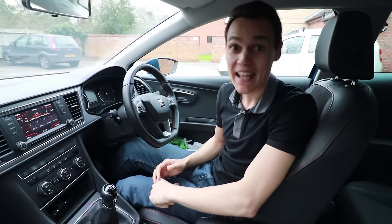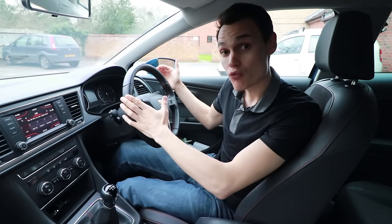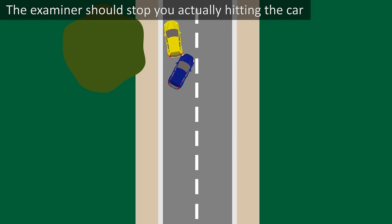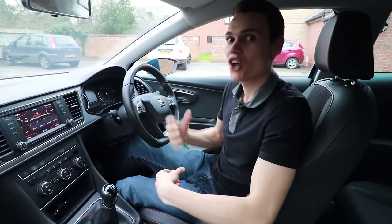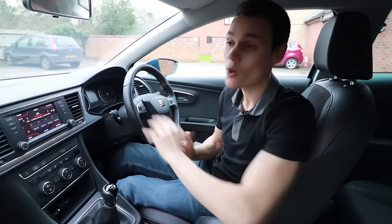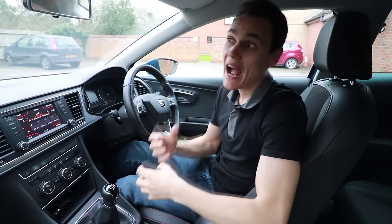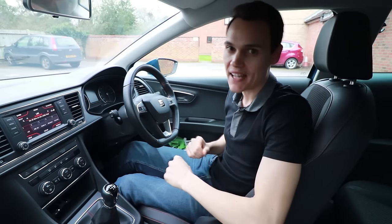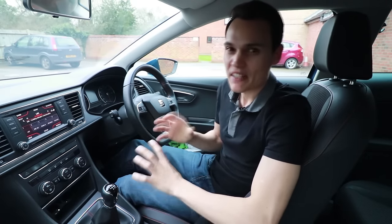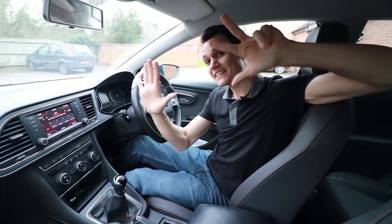The seventh most common reason is move off control. Number five was move off safely — about observations and not making anyone brake. Move off control is about how you handle the car when you move away. Does the car roll back during the angle start? Do you shoot forwards and nearly hit the car in front? If you fail for move off control, it was most likely because you were on a hill and rolled back too much. Examiners do have some tolerance for how much you roll back before failing you.